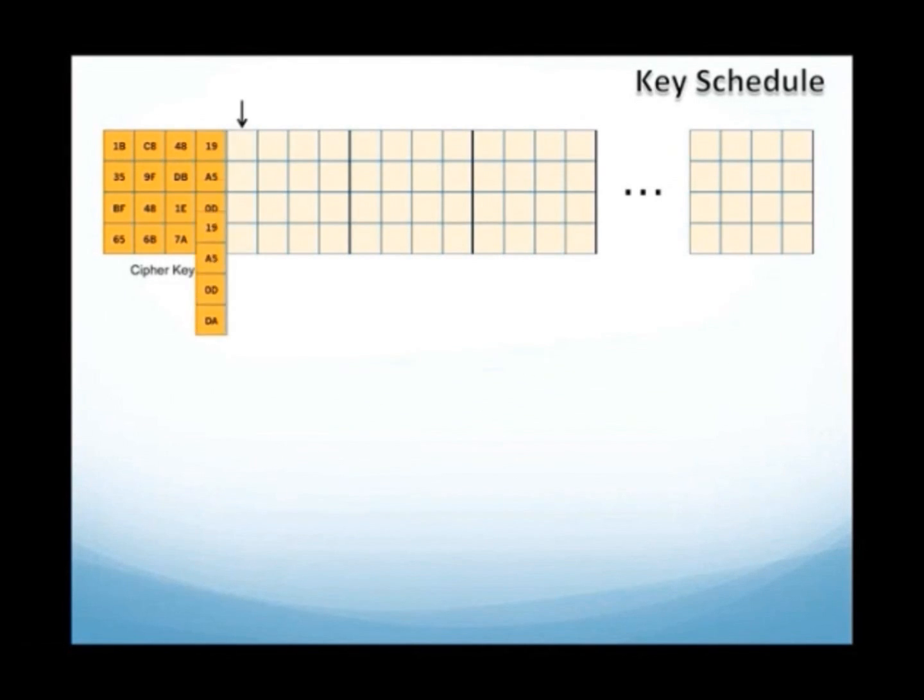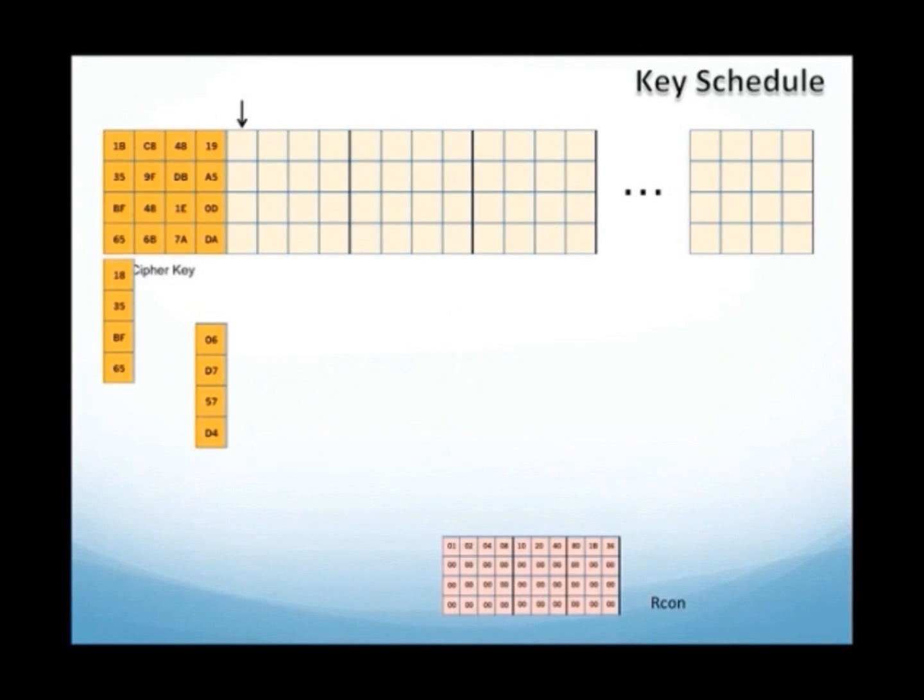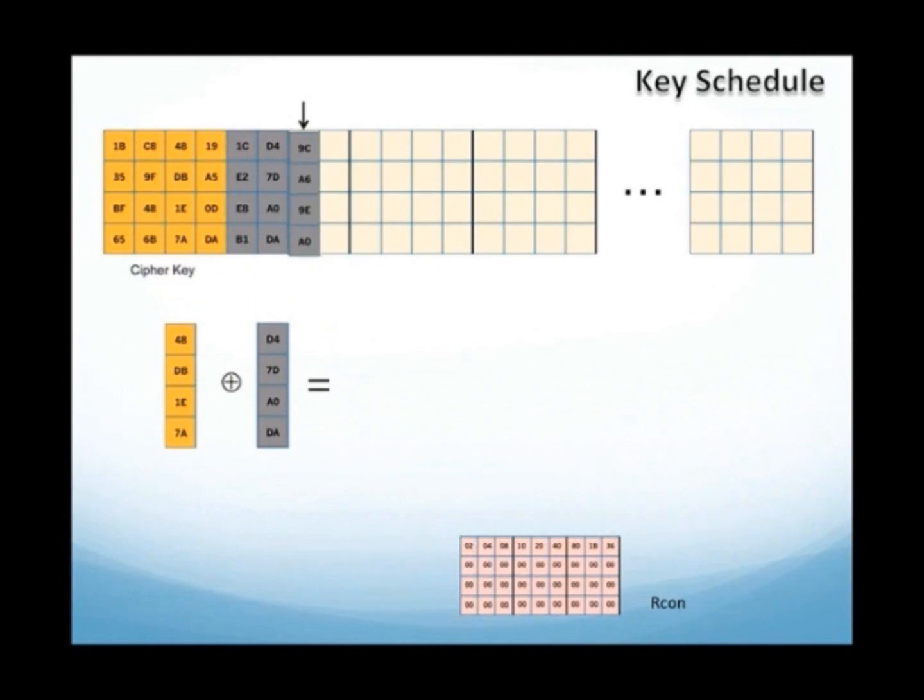To obtain the first column in the key round, a RotWord operation of the last column in the cipher key is carried out. It consists of a vertical rotation of one byte of the column. This column is then updated with a SubBytes operation, as already explained, and it is combined with the first column of the cipher key and the first column of the Rcon matrix using XOR operations. The remaining columns in the round key matrix are the result of combining the previous column with the corresponding column of the cipher key. This is how the first round key is generated.